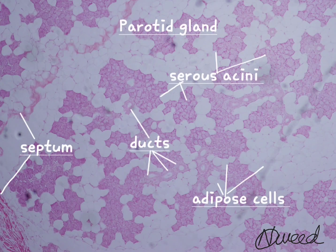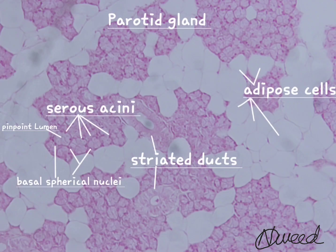The major salivary glands include parotid, submandibular, and sublingual glands. These are compound tubuloalveolar glands, each of which is surrounded by a capsule of dense irregular connective tissue. From the capsule, connective tissue septa extends into the glands and divides it into lobes and lobules.